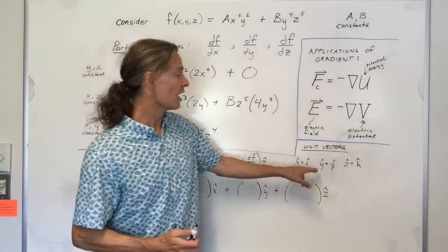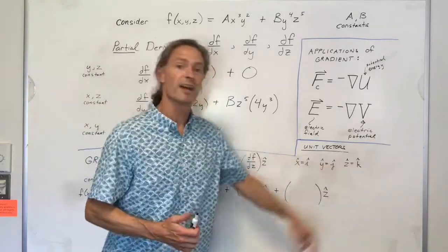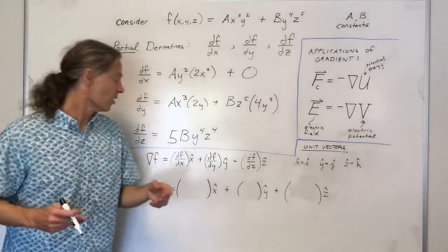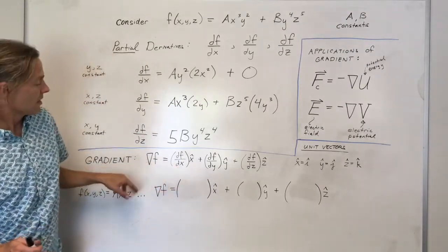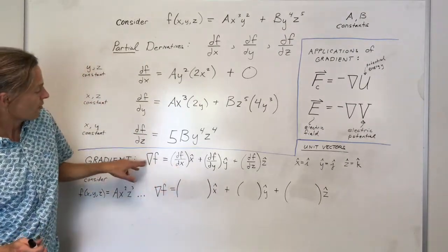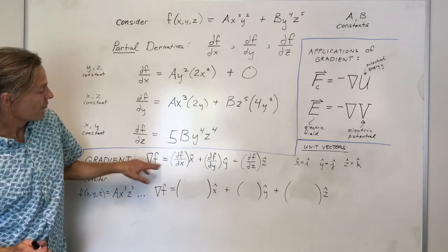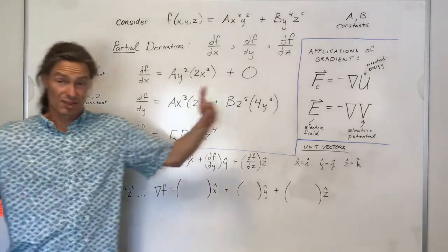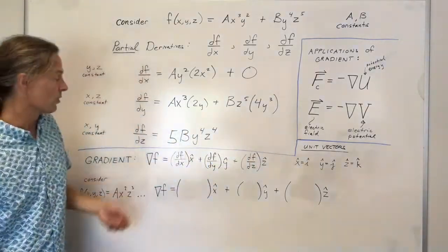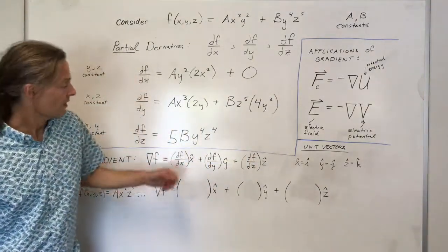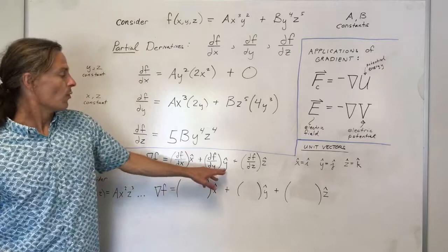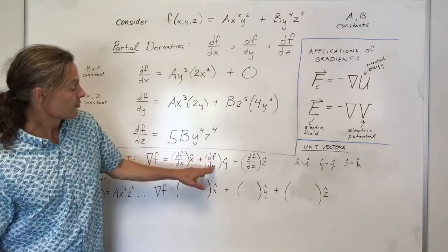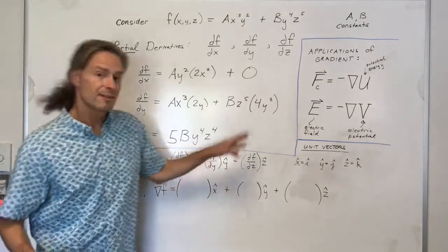You could also use i, j, or k in place of x̂, ŷ, ẑ — they mean the same thing. The x component of the gradient of f is just the partial derivative of f with respect to x, assuming f is some multivariable function of x, y, and z. The y component of the gradient of f is the partial derivative of f with respect to y, and so forth.